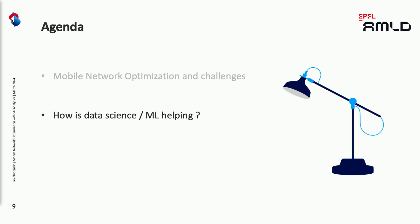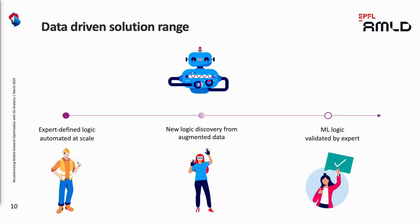Now that the context and challenges are clear, we would like to show three concrete use cases. Before going into the details, it's good to see the broad data-driven range for transparency — from the left, something already trialed and in production rolled out across the whole network, to the right, something we will do in the next innovation sprint. The first use case starts with a mobile network expert's predefined logic, and we use data science and big data pipelines to fine-tune parameters and automate at scale.